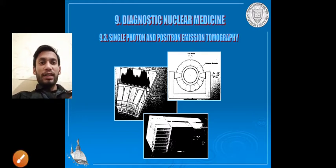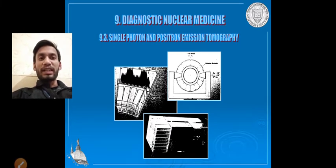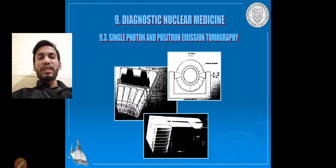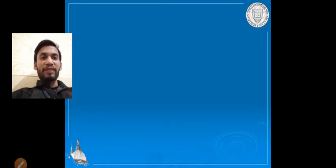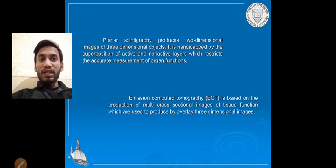We are going to discuss nuclear medicine radiology covering single photon emission tomography (SPECT) and positron emission tomography (PET). Planar scintigraphy produces two-dimensional images of a three-dimensional object.